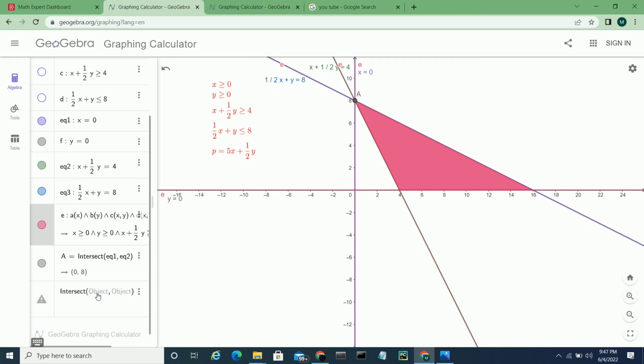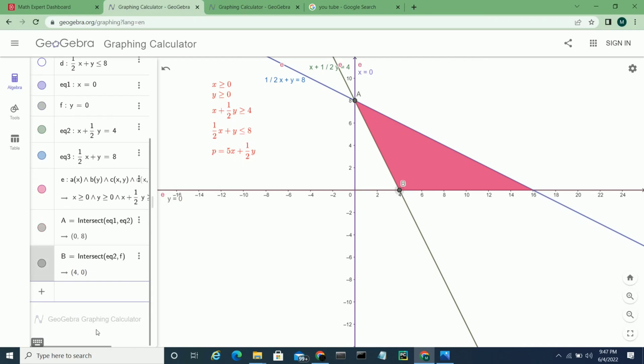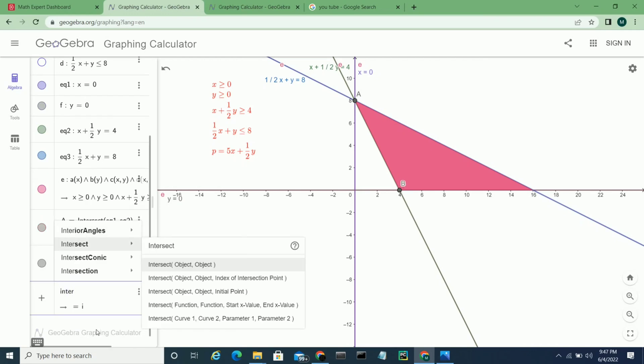Same procedure. Now this time I want to find intersection of equation 2 and f, so 4 comma 0, labeled as B.